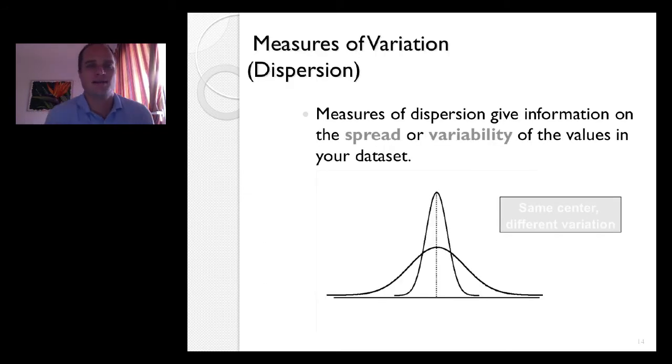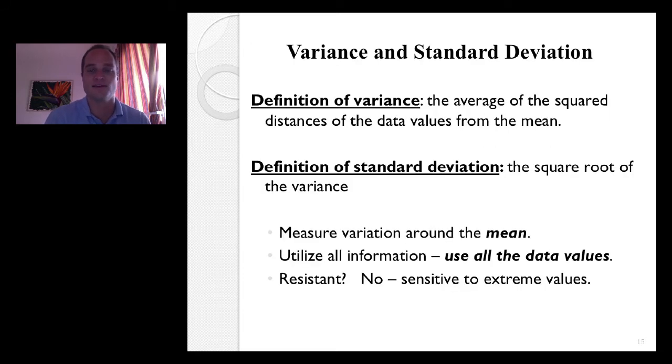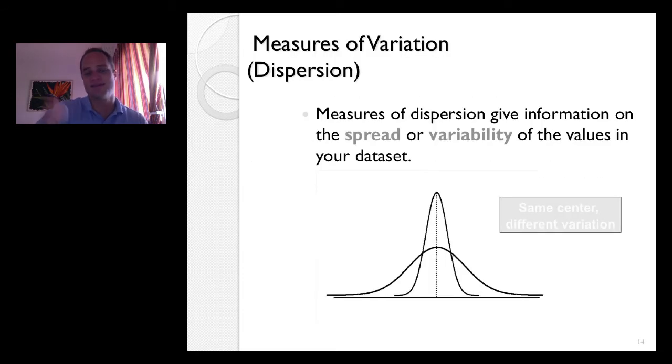So, measures of variability. You can see that these two graphs, well, these two graphs have the same center, but they have different variability, different variation. And so we're going to condense that into the variance and the standard deviation. In this case, they have the same mean, but they have the same different variability. Now, if you're comparing populations or samples, often you'll have different means and different measures of variability.